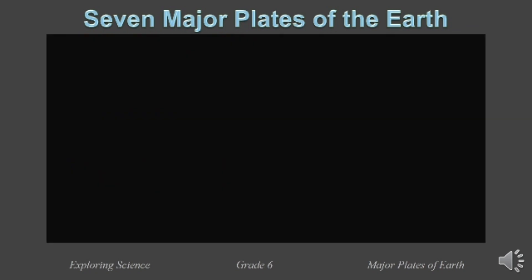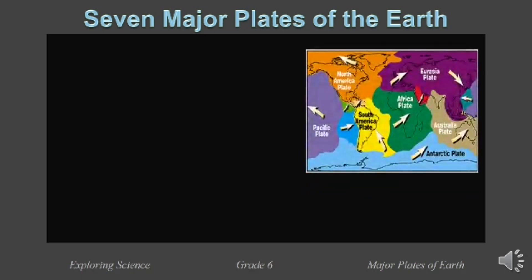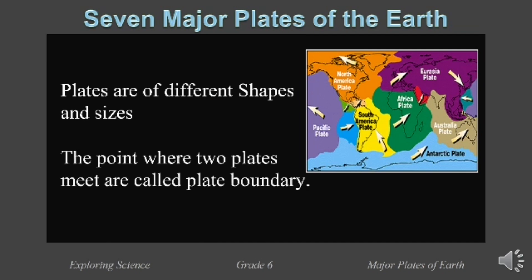By looking at the seven major plates of the Earth, we know that plates are of different shapes and sizes. The point where two plates meet is called a plate boundary.